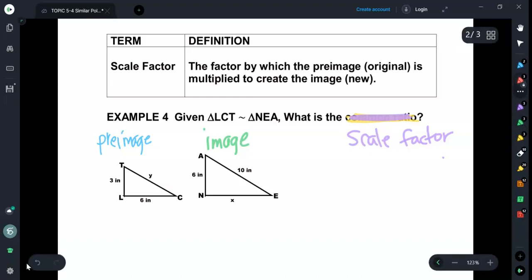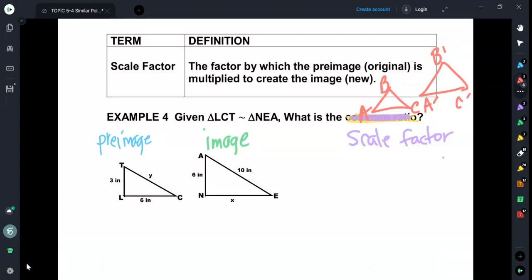If you remember, sometimes you'll see a triangle ABC and then another triangle A prime, B prime, C prime. Prime is a way that we can indicate image as well.